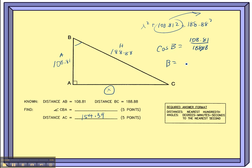So to find B, I find the inverse cosine of that. Inverse cosine of that whole fraction, 108.81. Let's see if I remember my decimal point this time. Yep, I sure did.